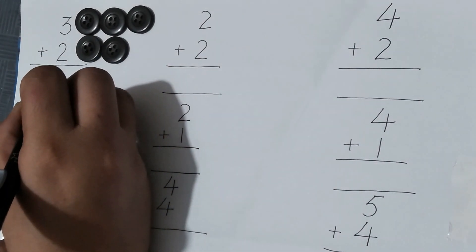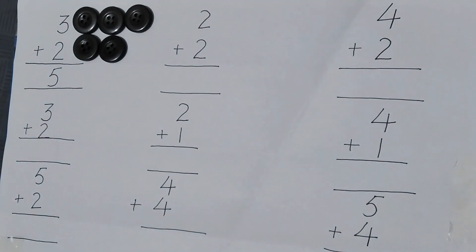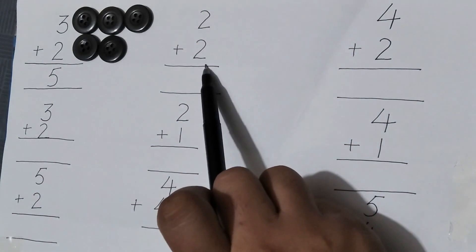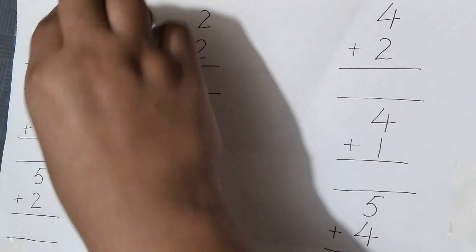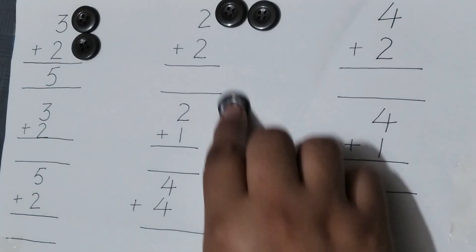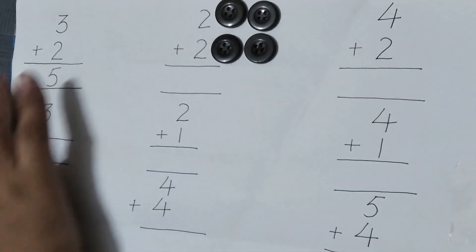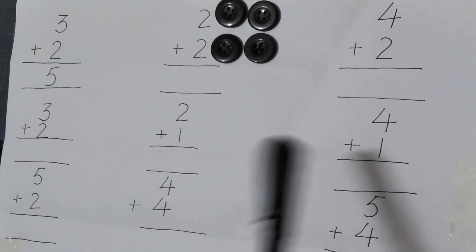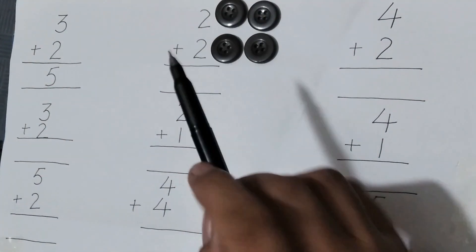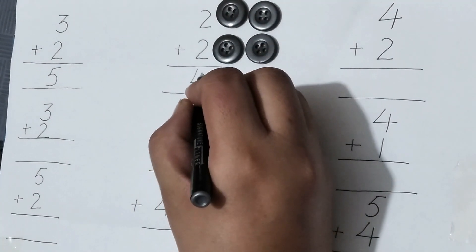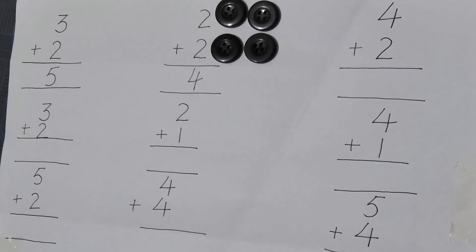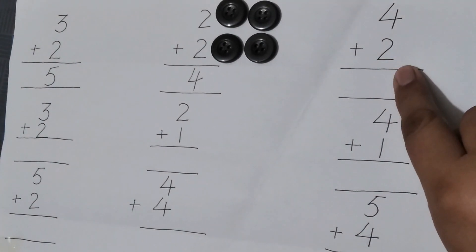Here is the second question: two plus two. I will take two buttons — one and two. One, two. Now I will count: one, two, three, four. Here the answer is four.